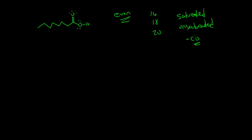We talked about how to name these fatty acids. In the name, we write the number of carbons — so 16 would mean that we have 16 carbons — then a colon, and then the number of double bonds present. If there are no double bonds, it's 16:0.